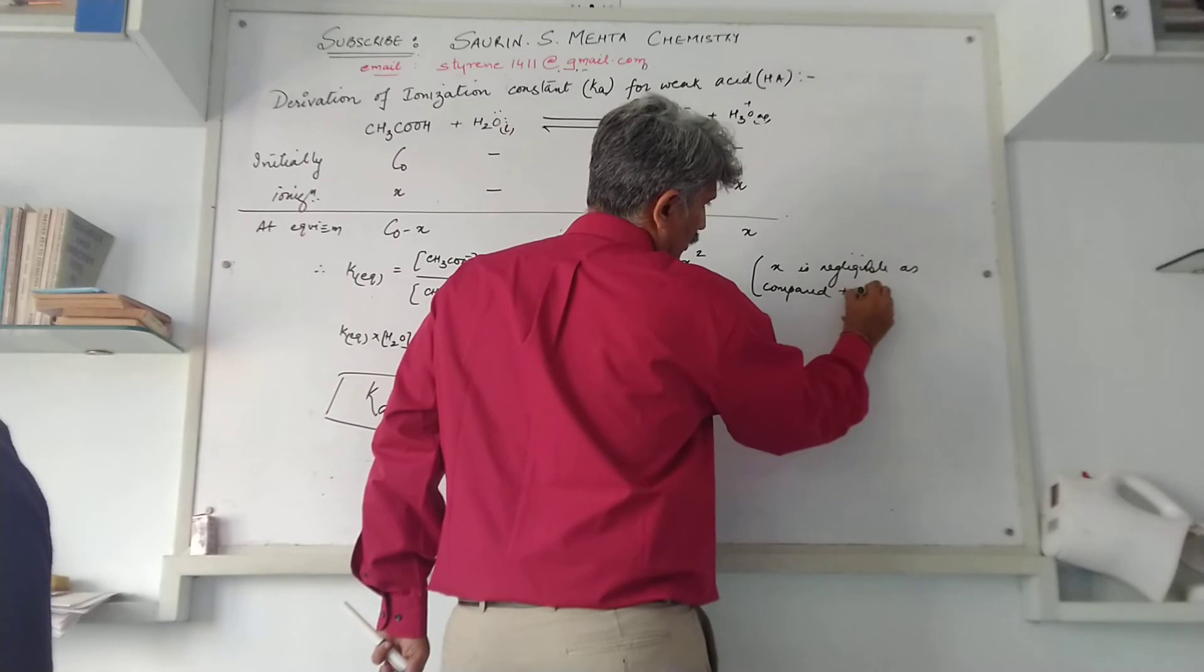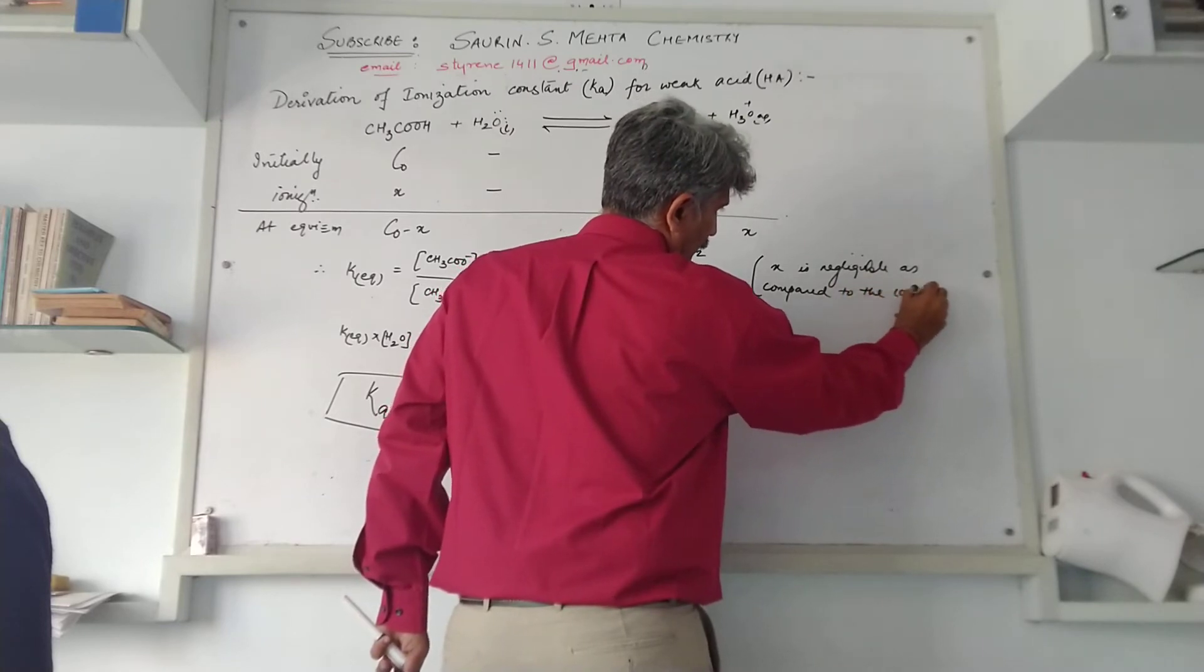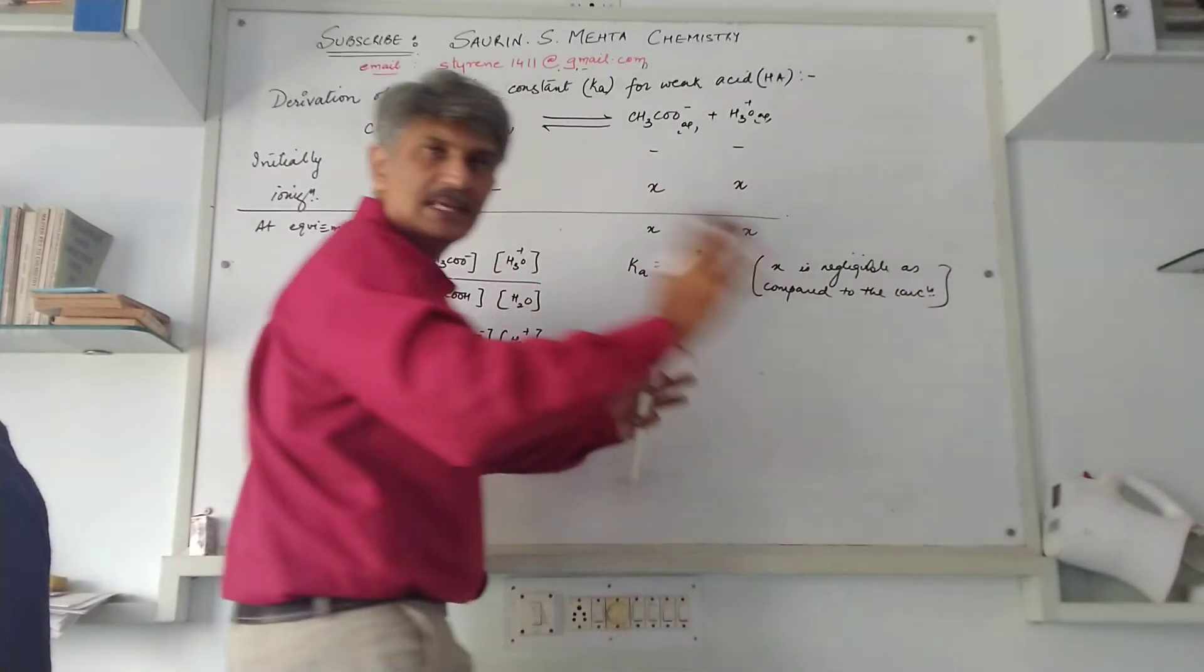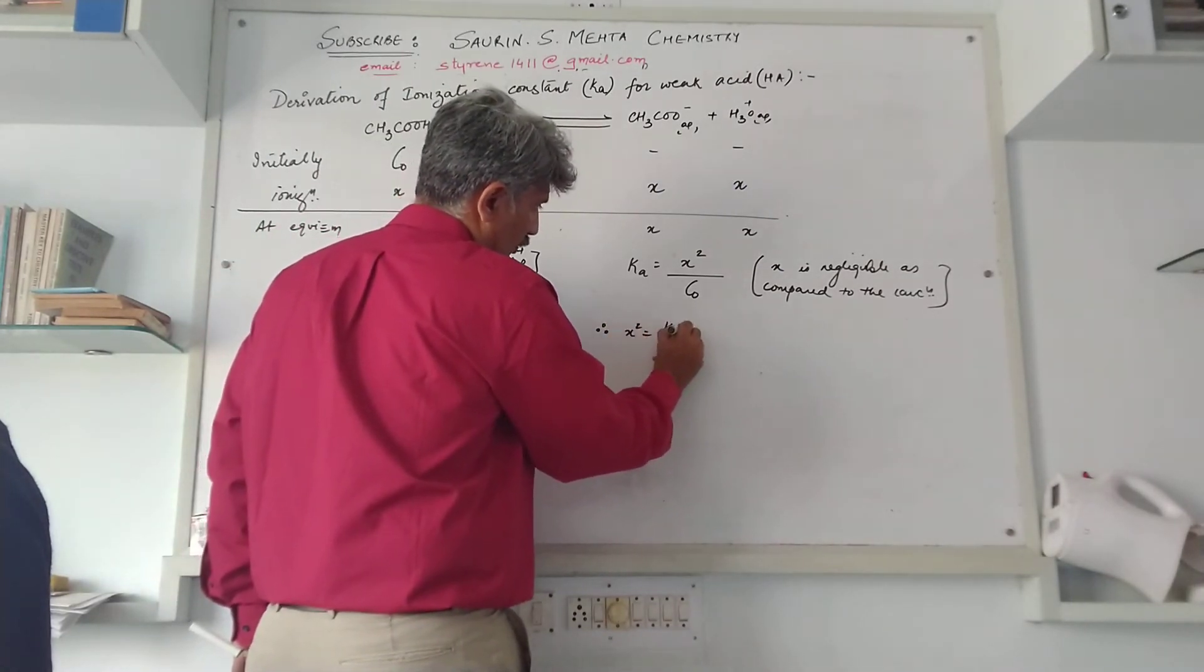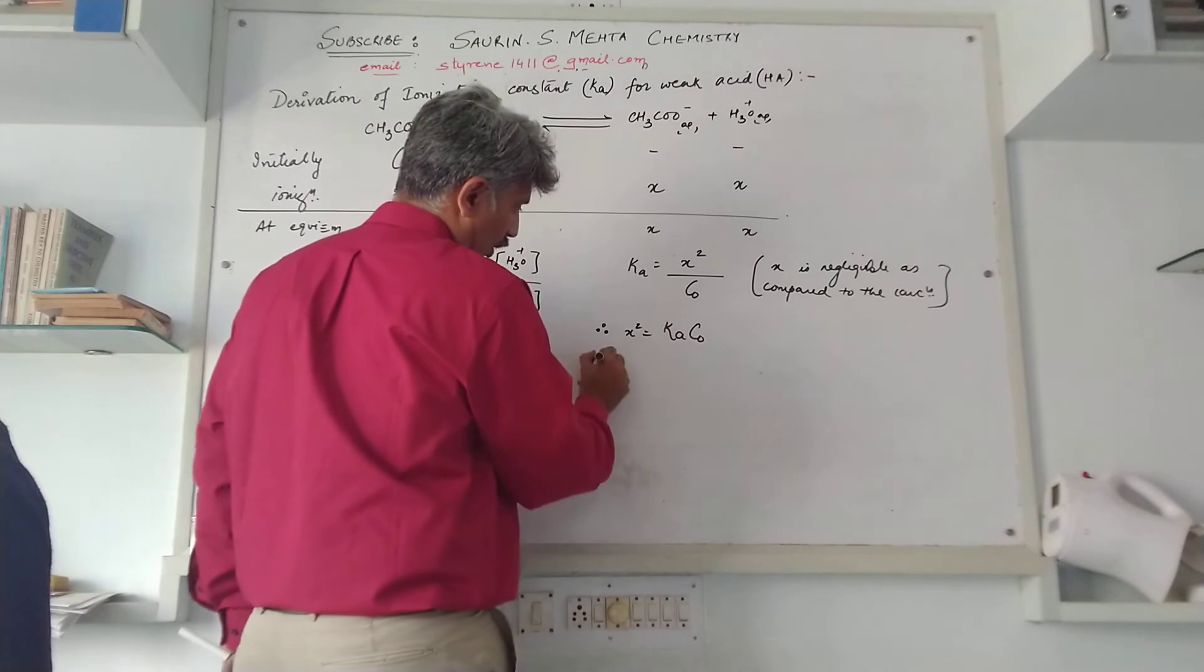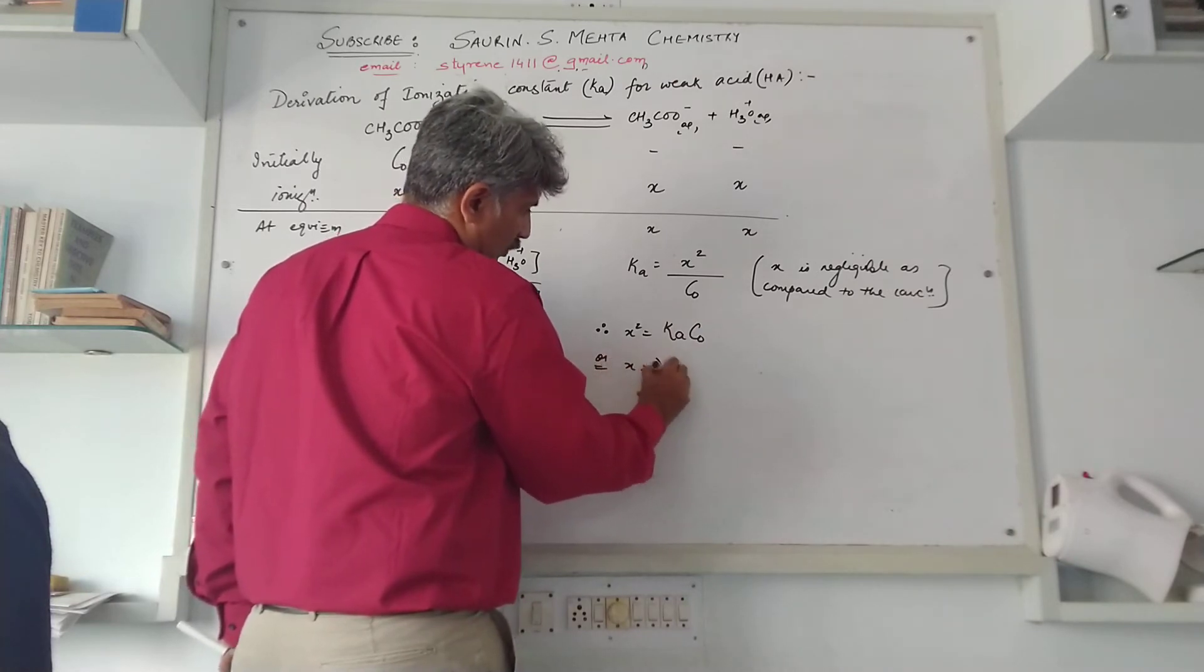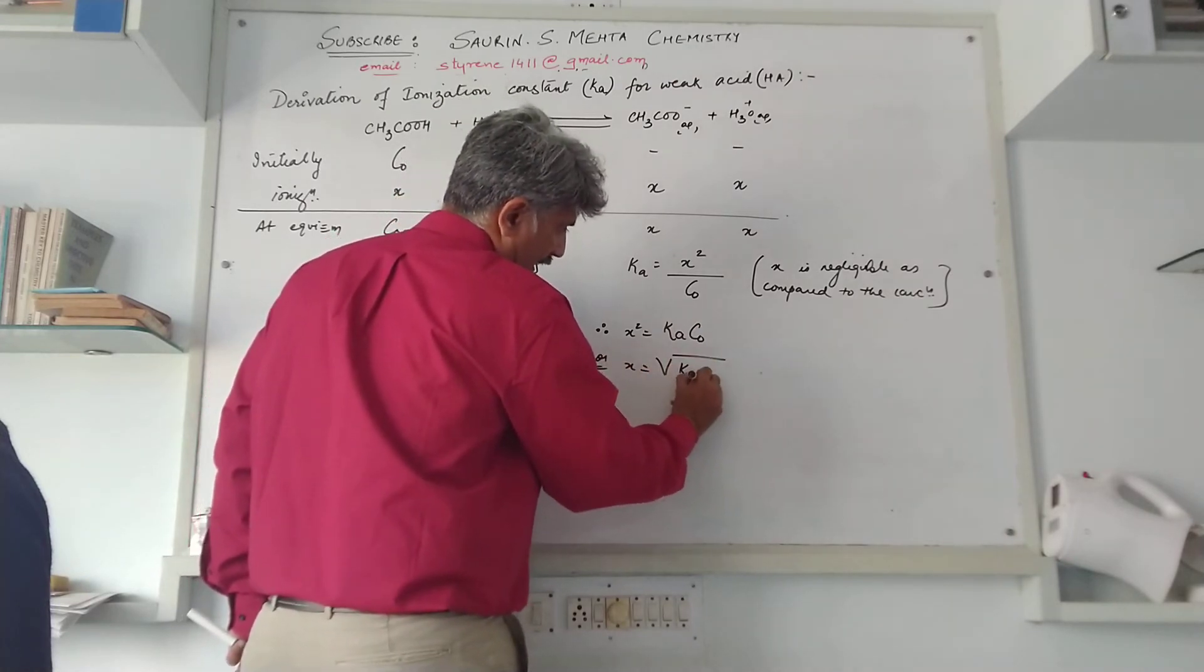So another equation we'll write: Ka is equal to x into x, is x squared upon C0 minus x, I'll write as C0, why? Because x is negligible as compared to the total concentration, and so we neglect that.